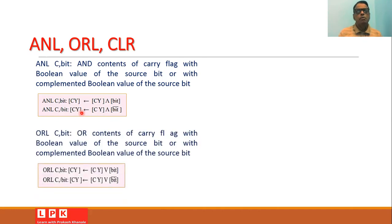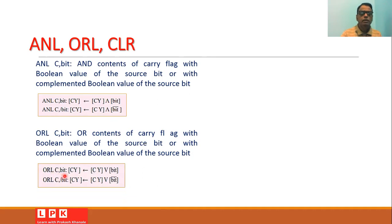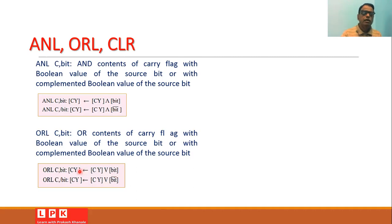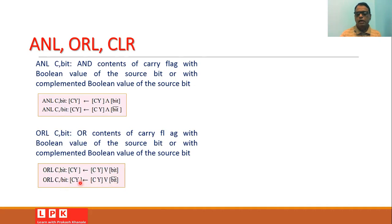Another instruction is ORL C, bit. This instruction ORs the content of the carry flag with the boolean value of the source bit or with its complement. If you write ORL C, bit, the carry is ORed with the bit value and the result is stored in the carry flag. If you write ORL C, /bit, the carry is ORed with the complement of the bit value and the result affects the carry flag.